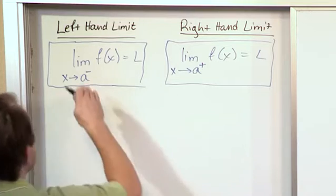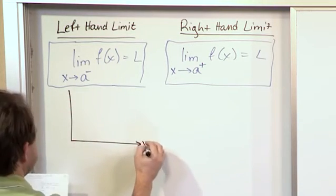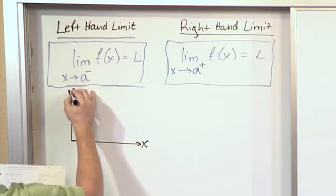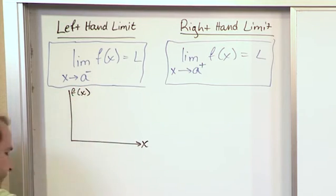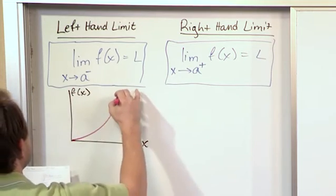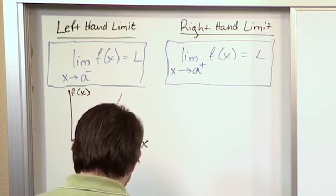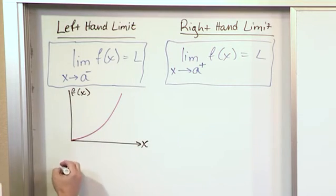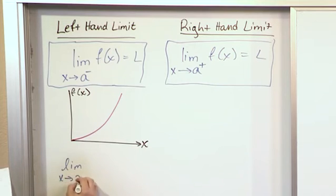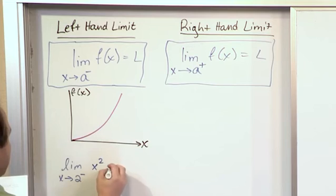what this might look like for a left-hand limit, a real simple left-hand limit, nothing fancy. If you have x and f(x), let's say the function that I'm interested in looks something like this. And if I'm approaching... let's say I'm going to take the limit as x approaches 2 from the left of the function x squared. Because this is a parabola,